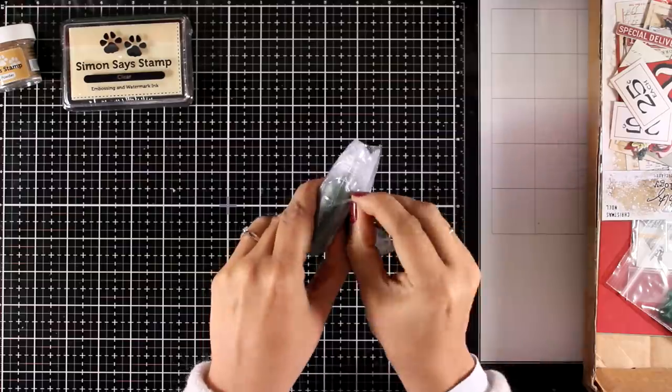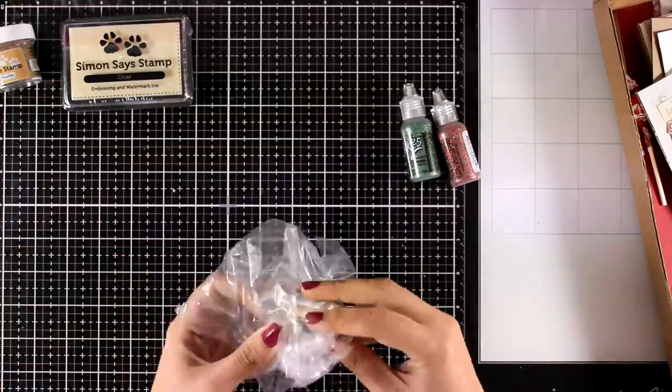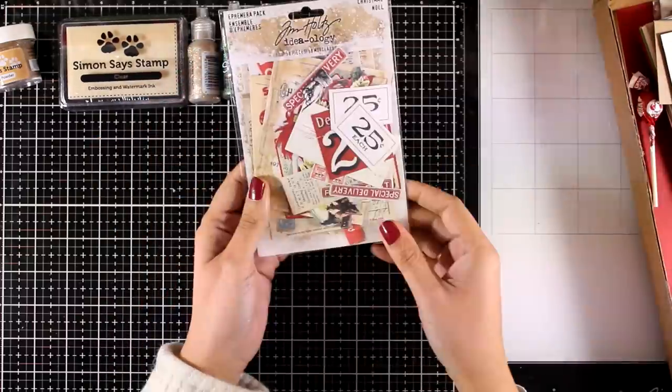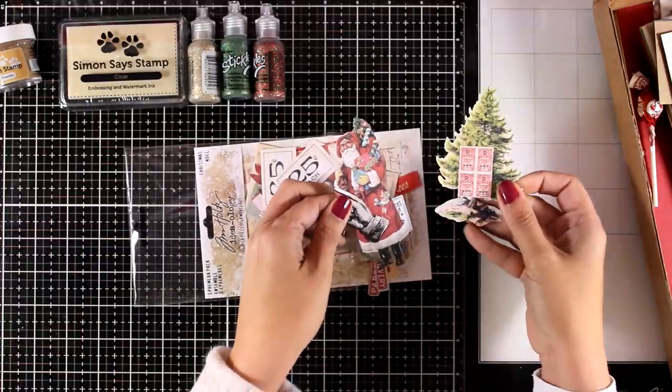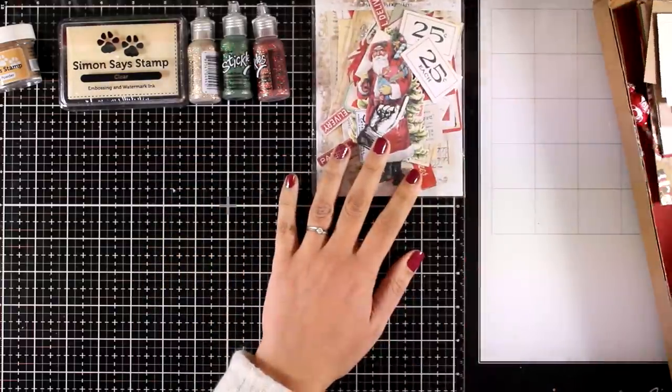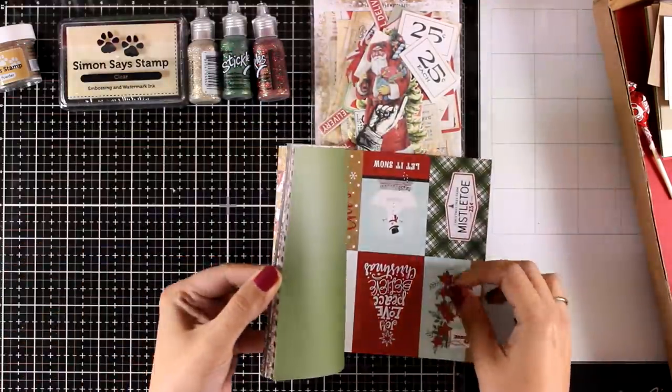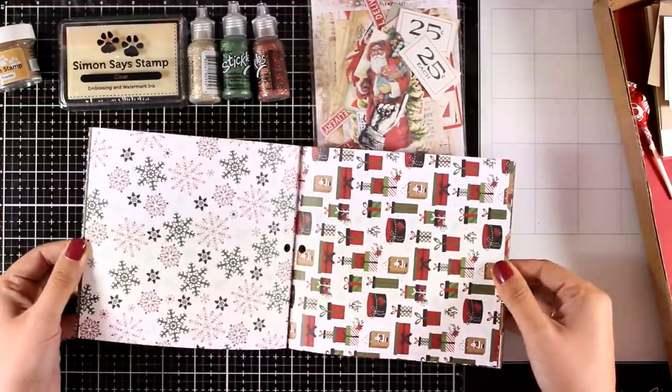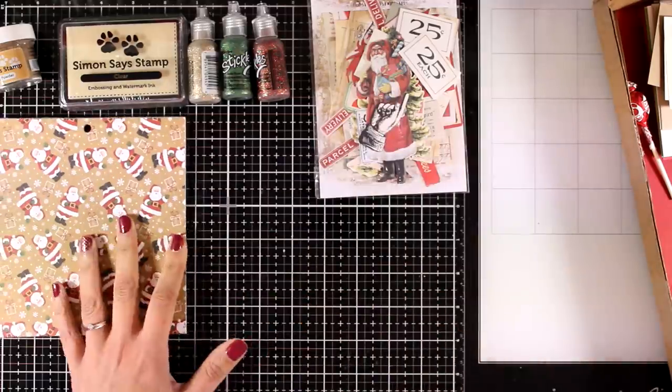First of all, you'll get a clear embossing ink as well as this gold embossing powder. You'll also get three bottles of glitter Stickles in red, green, and gold, perfect for Christmas projects. What I absolutely love about the kit is that you get this package of ephemera. This is by Tim Holtz and it's packed with cutouts that I'll be using for my cards today. You also get six by six pattern papers in beautiful Christmas colors. I love the traditional colors when it comes to Christmas, so this is completely my style.